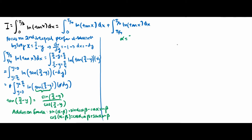We let alpha be equivalent to pi over 2 and beta be equivalent to y. Using the addition formula, the numerator becomes sine(pi/2)cos(y) minus cos(pi/2)sin(y), and the denominator becomes cos(pi/2)cos(y) plus sin(pi/2)sin(y).